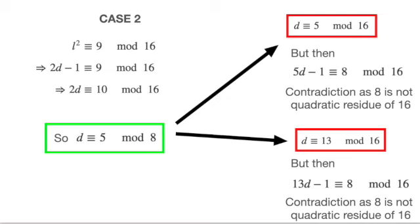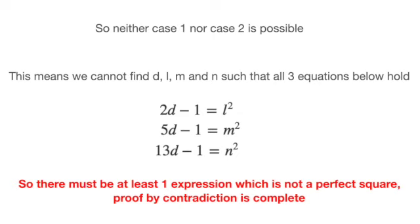Therefore, having ruled out all the possibilities above, we can conclude that no such l, m, and n exist. And so, 2d-1, 5d-1, and 13d-1 cannot all be perfect squares at the same time. Therefore, one of them is not a perfect square, as the question wishes us to prove.